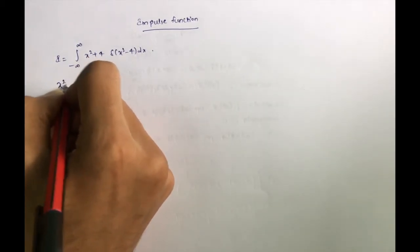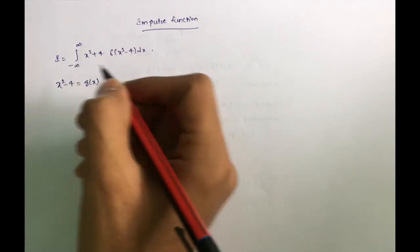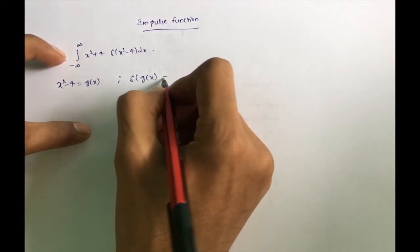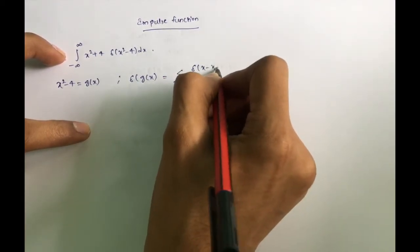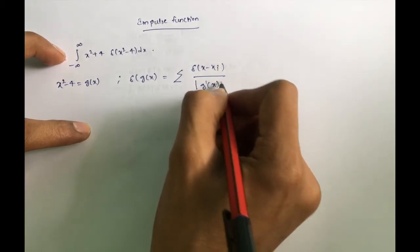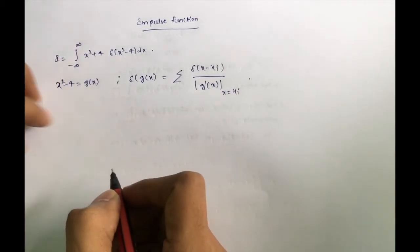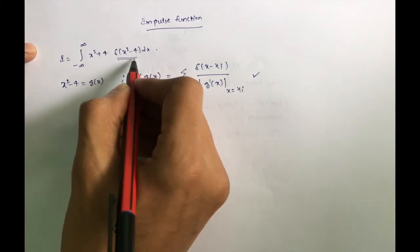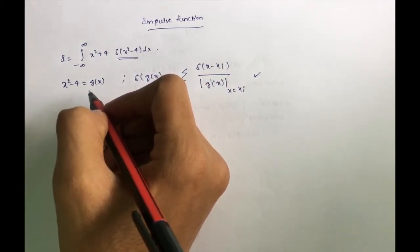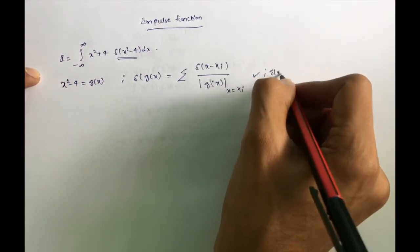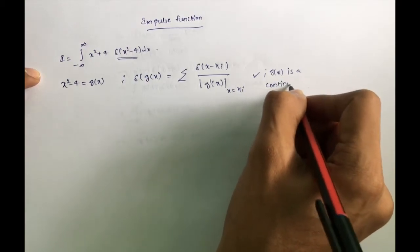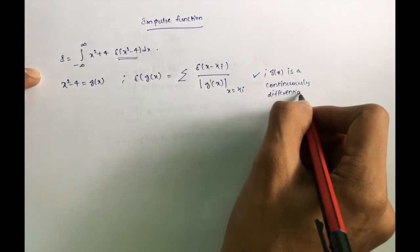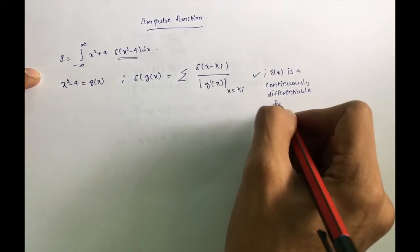Let g(x) = x² - 4, so δ(x² - 4) = δ(g(x)). Now δ(g(x)) can be written as the summation of δ(x - xᵢ) / |g'(x)| evaluated at x = xᵢ, where xᵢ are the roots of g(x). This is valid only if g(x) is a continuously differentiable function.